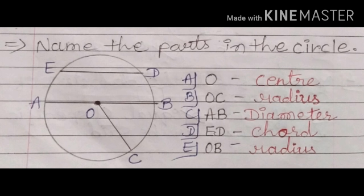The slanting line in the circle is called the radius. So OC will be the radius of the circle. AB goes from the middle of the circle all the way through — it will be the diameter. AB will be the diameter of the circle.